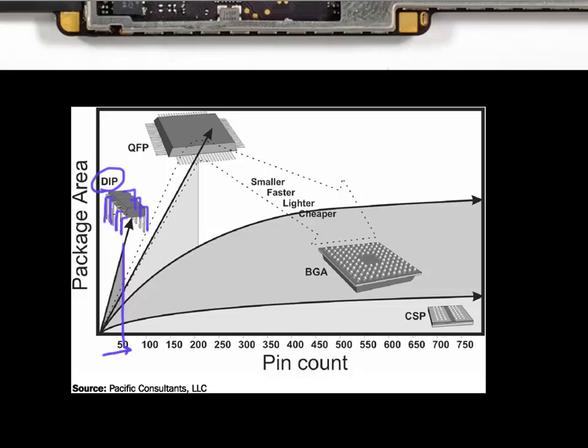After that, essentially you need to either your pins will start to collapse, or they won't function as well. So to the next evolution of that, which some of you might still have seen, are these quadruple flat packages where you have chips where you have pins coming out from all four sides.